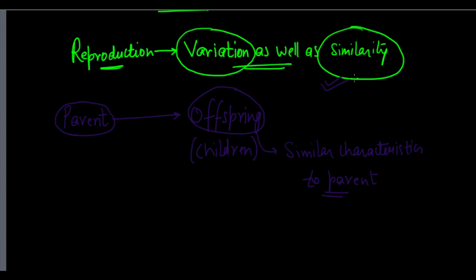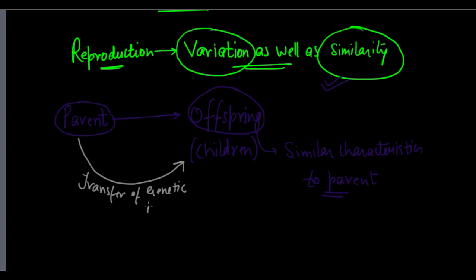There is a degree of similarity which is generated in reproduction. How does this come about? It is because during the process of reproduction, with the parent producing the offspring, there is a transfer of genetic material — a transfer of DNA from the parent to the offspring — due to which we have some similar characteristics being produced in the offspring.